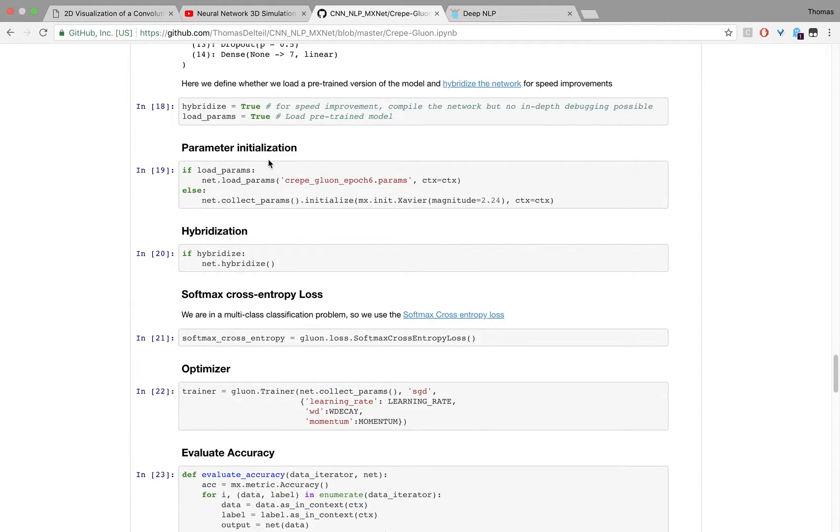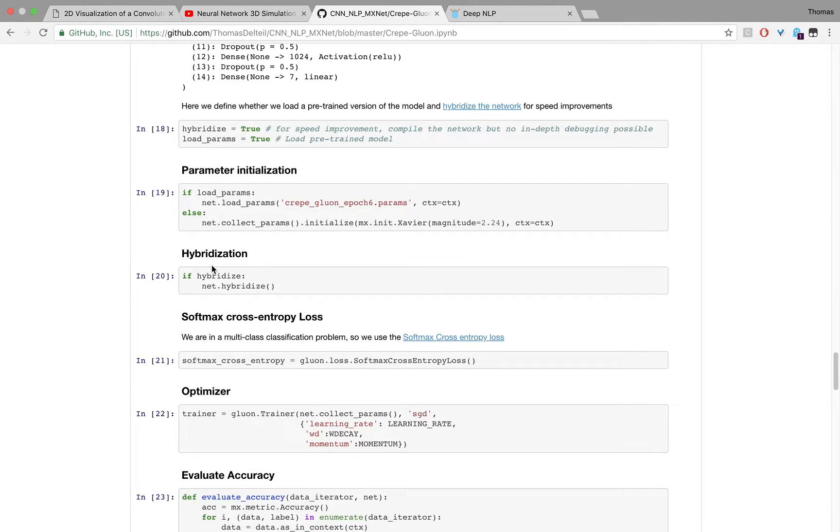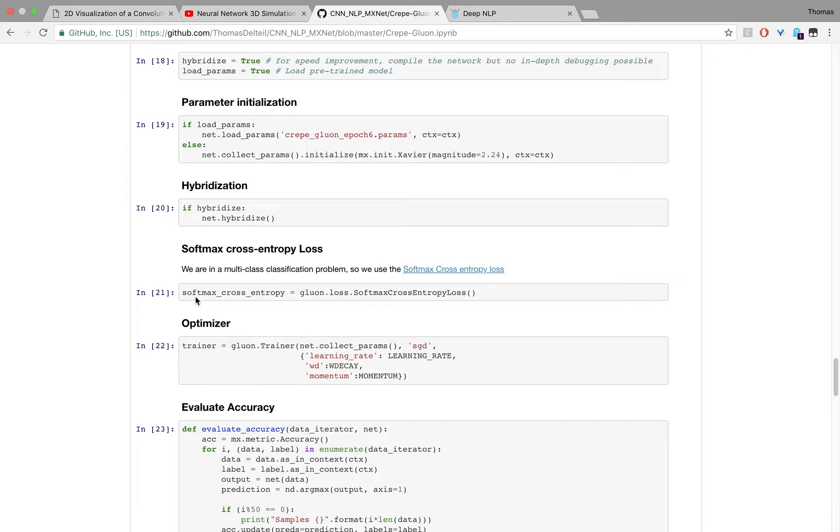We initialize the parameters. We hybridize, which is specific to Gluon where the computational graph is cached so it's much faster. We use the softmax and cross-entropy loss. Basically, we are performing a classification so we want to maximize the fact that the right class has been found.